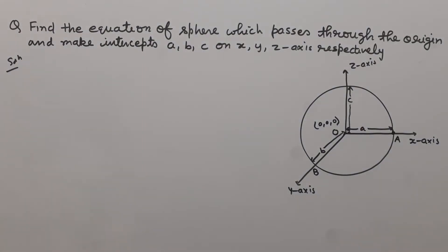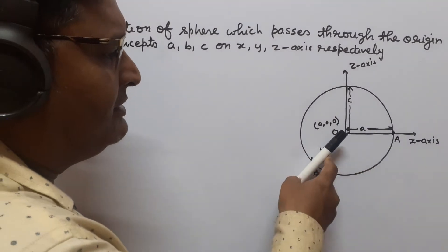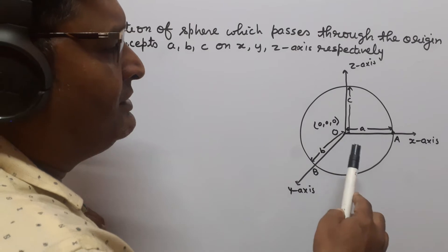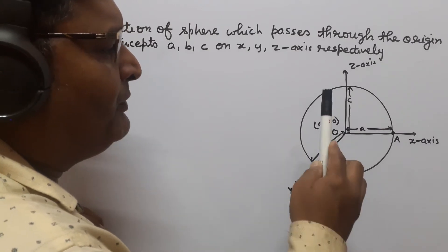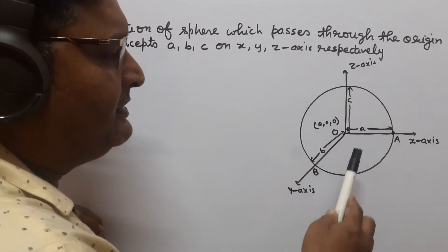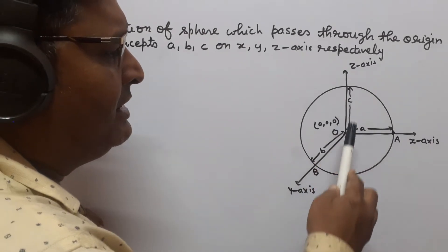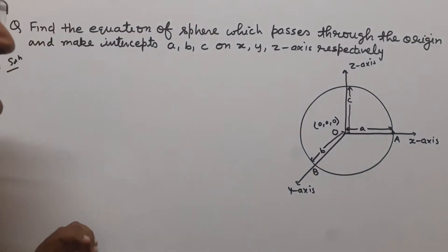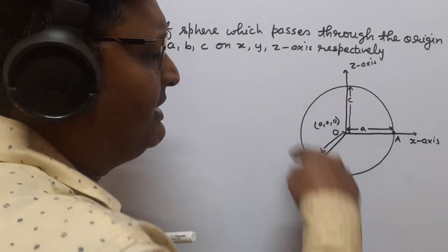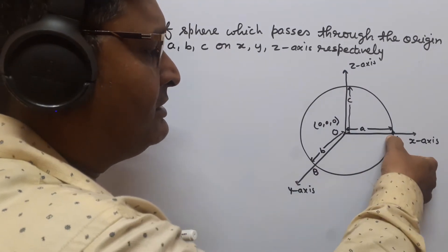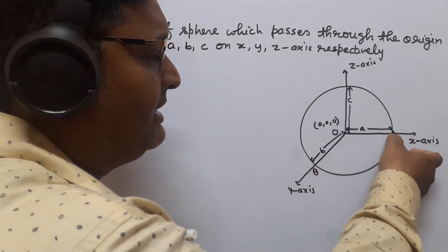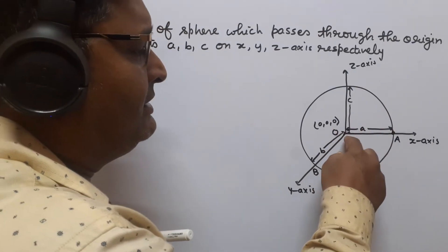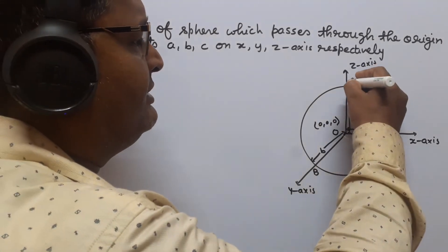The required sphere passes through the origin O and makes intercepts small a, b, c on X axis, Y axis, and Z axis respectively. We suppose that the required sphere intersects the X axis at capital point A, the Y axis at capital point B, and the Z axis at capital point C.